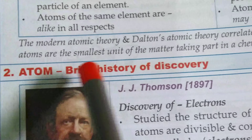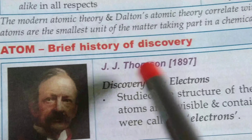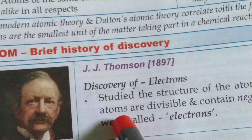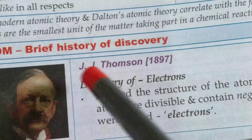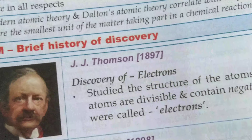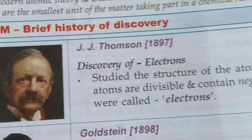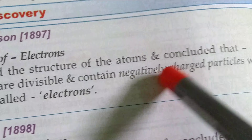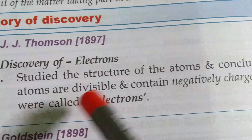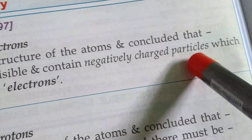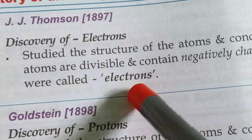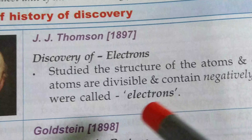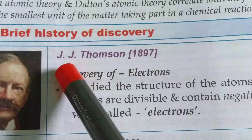Next, atom — brief history of discovery. J.J. Thomson: remember the scientist's name and his discovery carefully. J.J. Thomson — discovery of electrons. Electron was first discovered by J.J. Thomson. He studied the structure of atoms and concluded that atoms are divisible and contain negatively charged particles which are called electrons. So electrons are negatively charged particles, first discovered by J.J. Thomson.